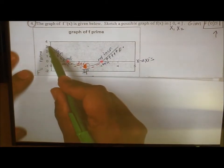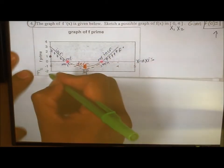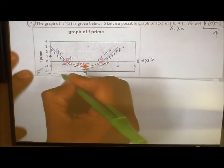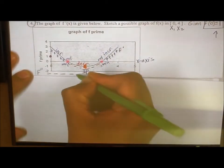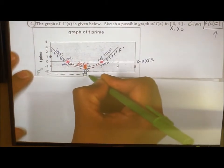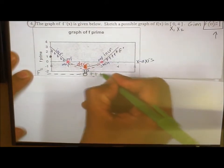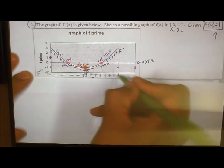See how f prime is decreasing from 0 up to 2? That means that the slopes of f prime are negative until we get here, then it's 0. And then all these slopes, because f prime is increasing, are all what? Are all positive.